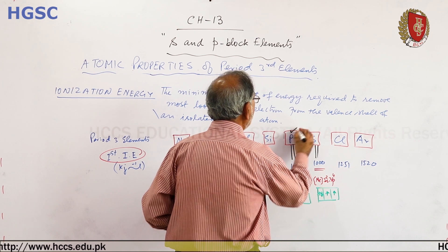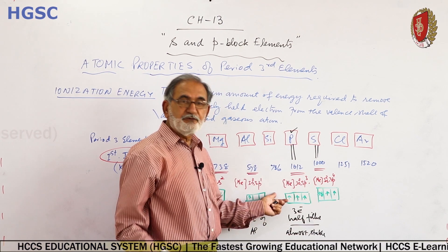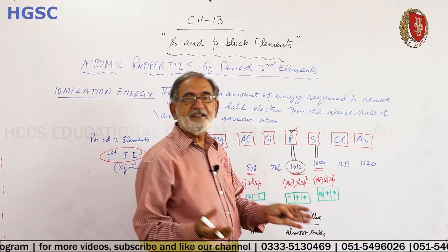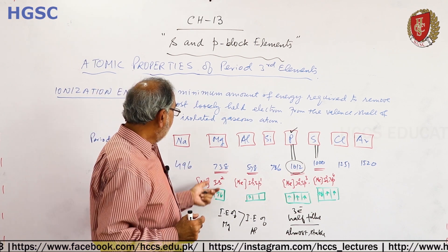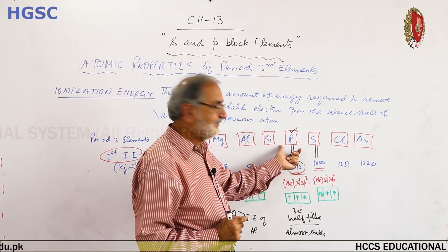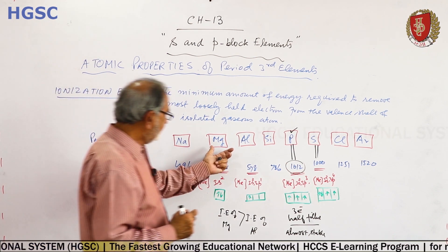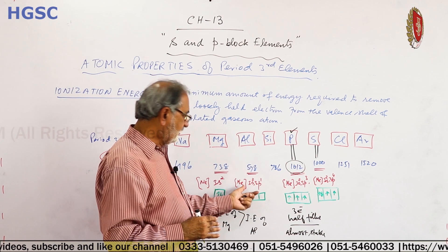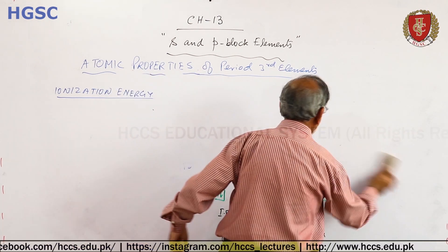Similarly for phosphorus versus sulfur: phosphorus has 3s2 3p3 — three electrons in p orbitals, which is a half-filled configuration and is relatively stable. Sulfur has 3s2 3p4, with one paired electron in p orbital that can be removed more easily due to electron-electron repulsion. Therefore, ionization energy of phosphorus is greater than that of sulfur despite sulfur coming later in the period. This can also be represented graphically, showing the dip at aluminium and sulfur in the ionization energy trend.